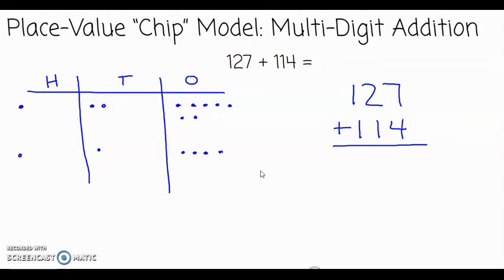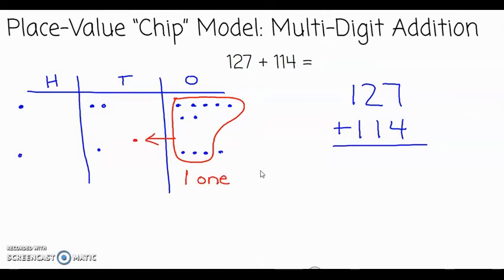I am now ready to add, beginning with the ones column. On my place value chart I see seven ones and four ones. Seven plus four is 11. The number 11 has a group of 10, which moves to the tens column, and I have one one left. Looking at the algorithm, seven plus four is 11 — one one and one ten.